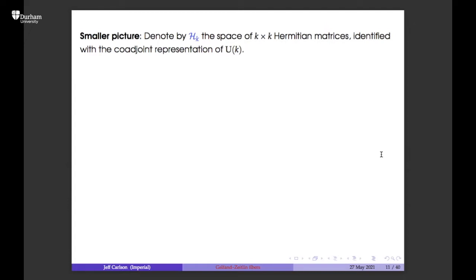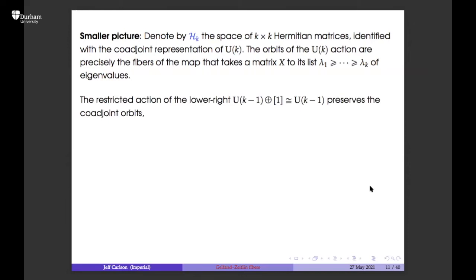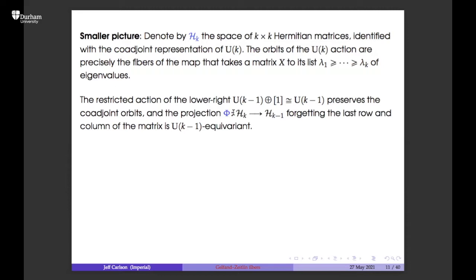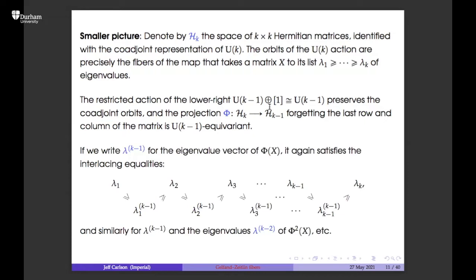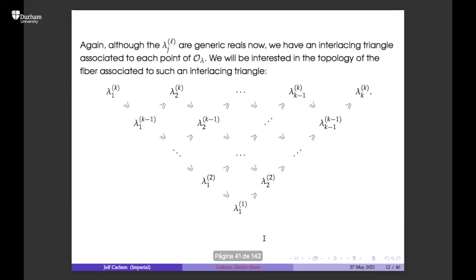We write Hermitian matrices as H_k, identify them with the coadjoint representation, and the orbits are the fibers of the map that takes x to its list of eigenvalues. The restriction to the upper-left subgroup preserves the coadjoint orbits, and the projection where you lop off the end of a matrix is equivariant with respect to this subgroup. Writing lambda^(k-1) for the vector of eigenvalues of this truncation, it satisfies interlacing inequalities.